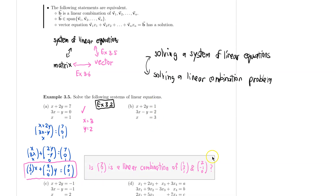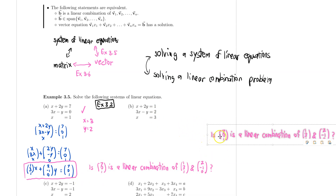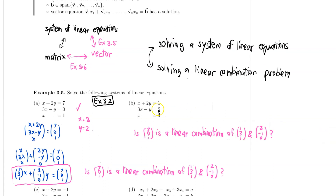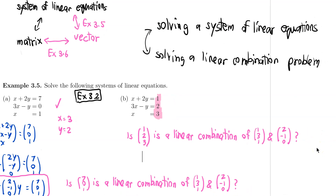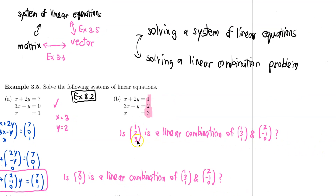This is basically asking if the vector on the right-hand side, (1, 2, 3), is a linear combination of the coefficients of x and y. The coefficient of x is (1, 3, 1) and the coefficient of y is (2, −1, 0). We have seen earlier that this vector (1, 2, 3) is not a linear combination of these two vectors. That means I cannot find x and y that satisfy this equation — so there is no solution.